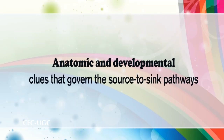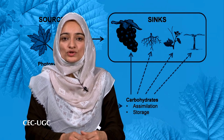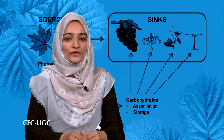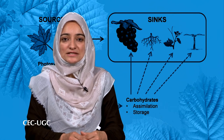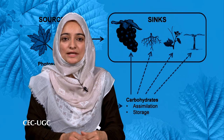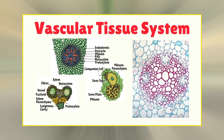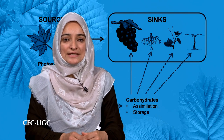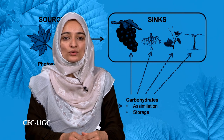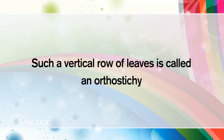Let us now discuss the anatomical and developmental clues that govern source-to-sink pathways. Although the overall pattern of transport in the phloem can be stated simply as source-to-sink movement, the specific pathways involved are often more complex. Not all sources supply all sinks on a plant; rather, certain sources preferentially supply specific sinks. In herbaceous plants such as sugar beet and soybean, the following generalizations can be made. Vascular connections: source leaves preferentially supply sinks with which they have direct vascular connections. In the shoot system, a given leaf is generally connected via the vascular system to other leaves directly above or below it on the stem. Such a vertical row of leaves is called an orthostichy.